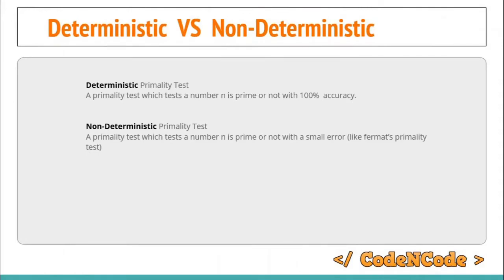A deterministic primality test algorithm returns whether the given number N is prime or not with 100% accuracy, while a non-deterministic primality test algorithm will test whether a number N is prime or not with a certain very small amount of error. The deterministic algorithm we've already seen runs in square root of N time, but now we need to study non-deterministic primality test algorithms.